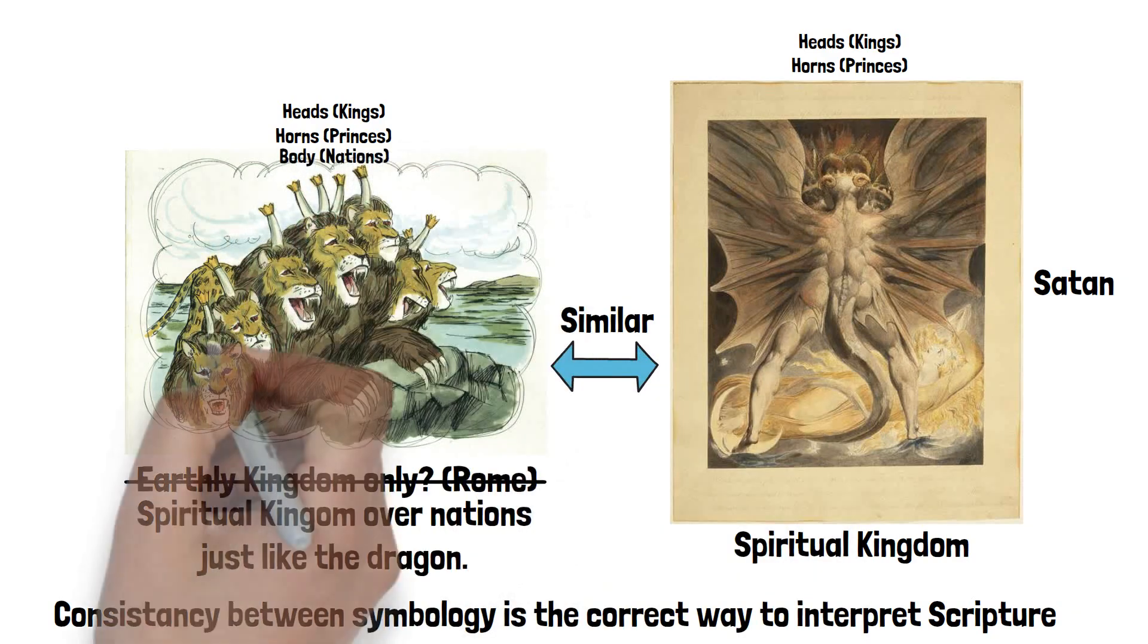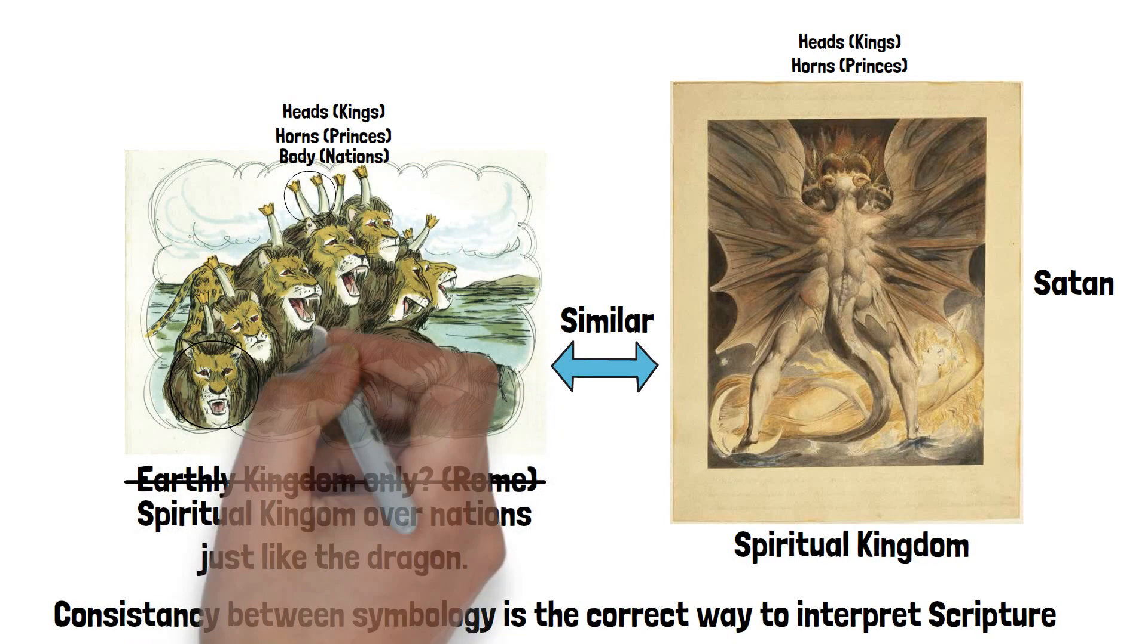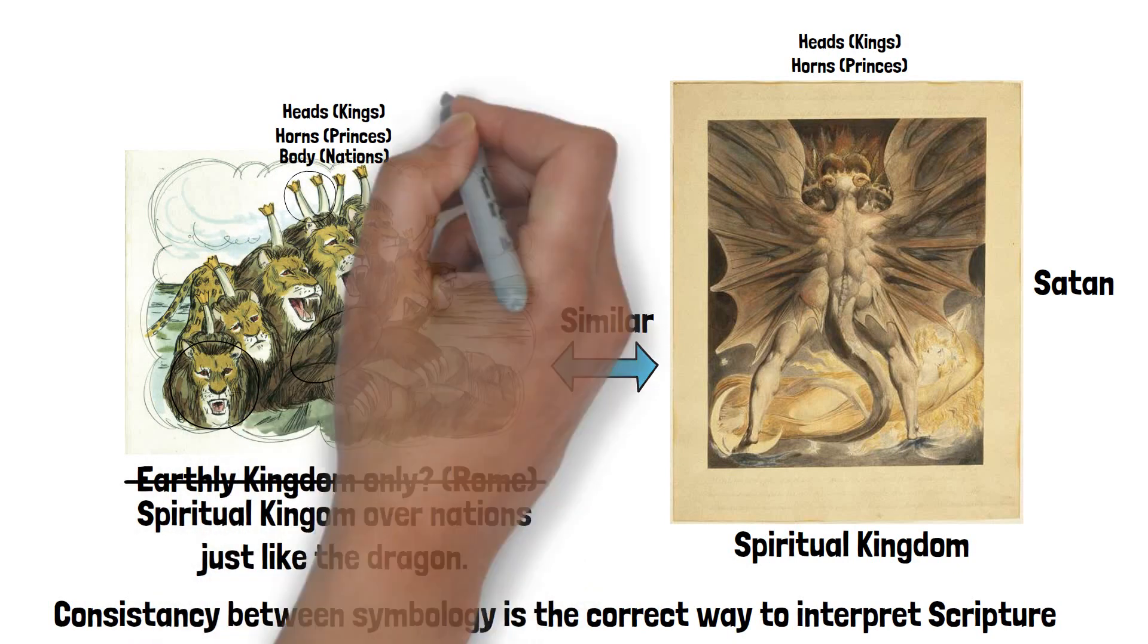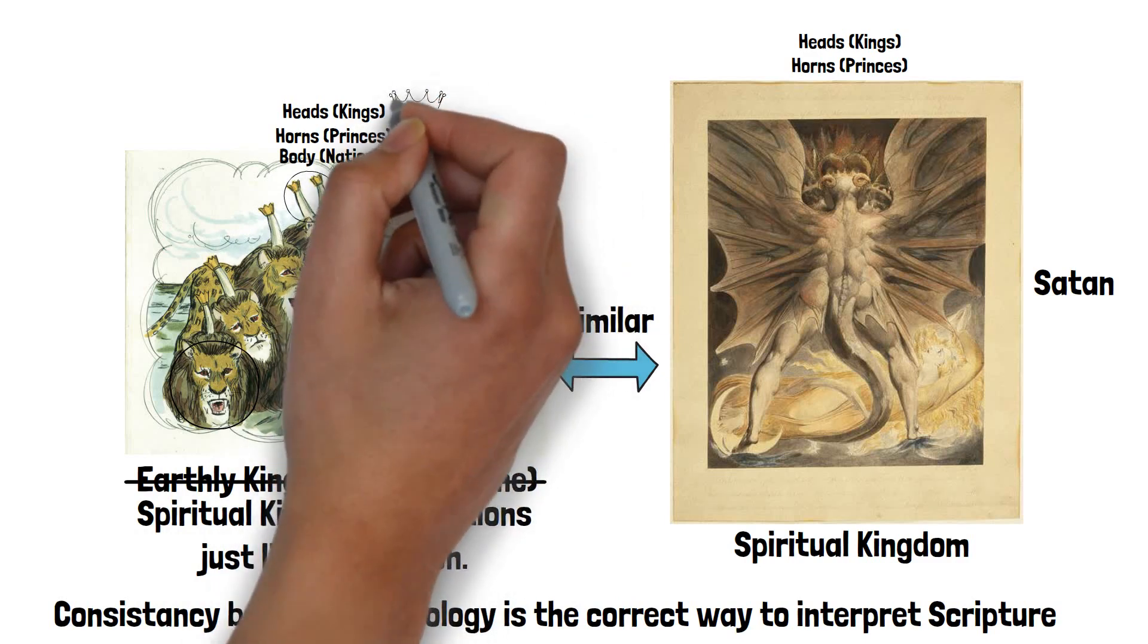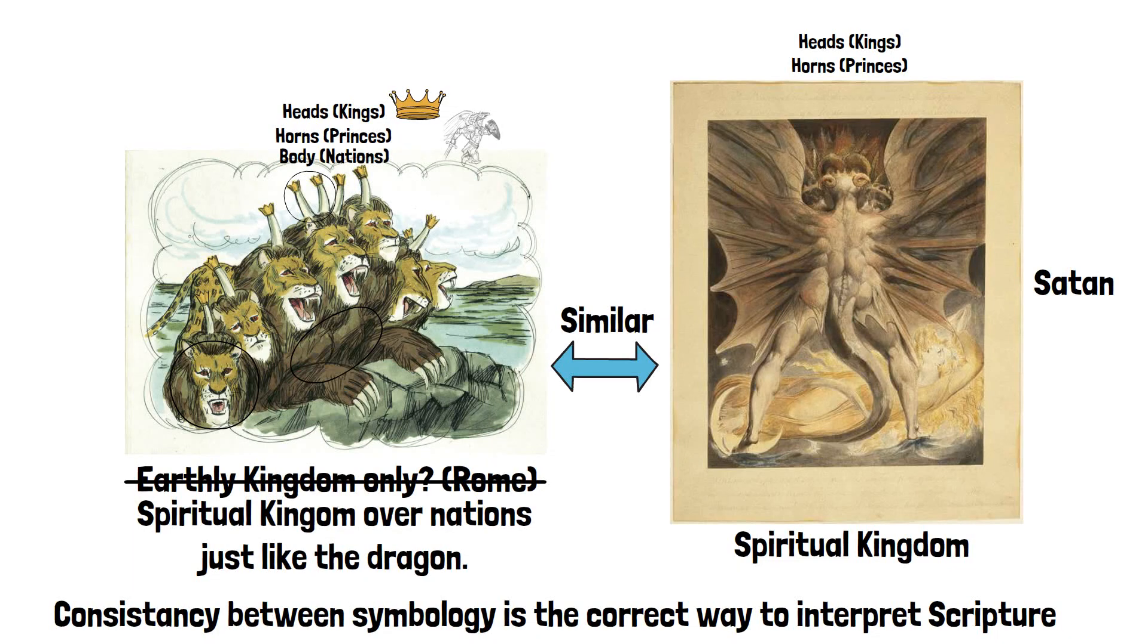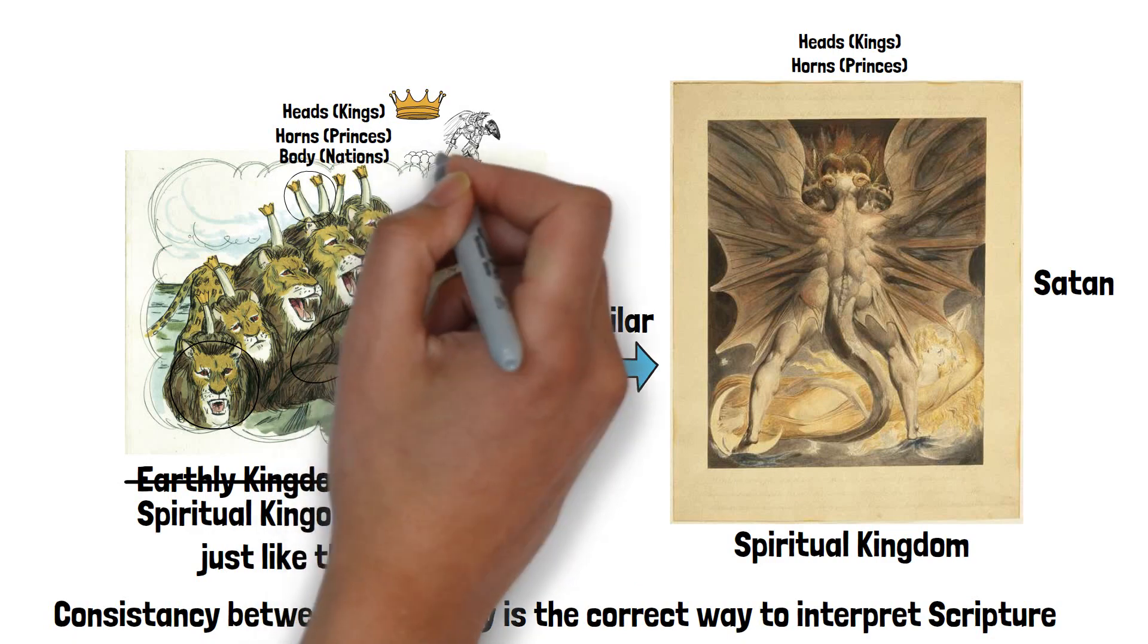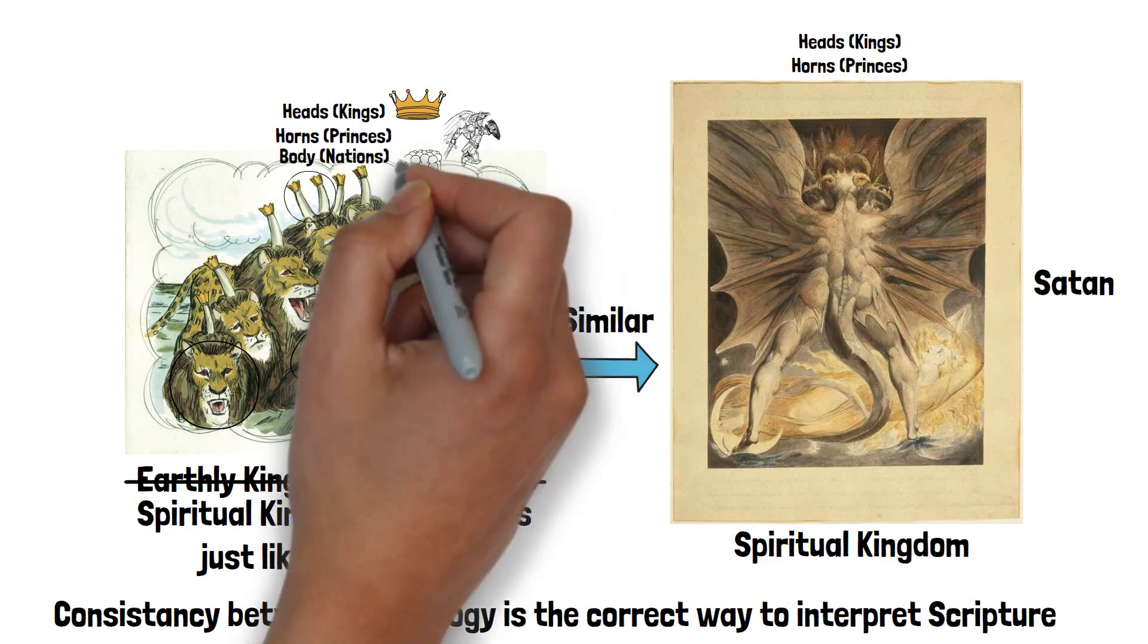The beast is of three primary aspects: heads, horns, and body. The head represents the high kings, the mighty spiritual authorities. The horn represents the princes that are subordinate to the heads, and the bodies consist of both the spiritual hosts and the earthly kingdoms that these heads and horns rule over.